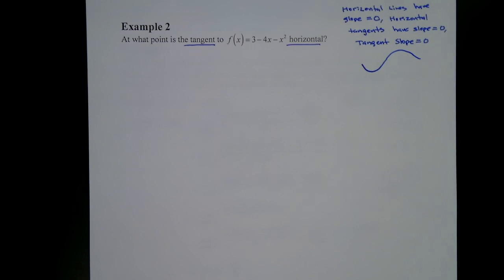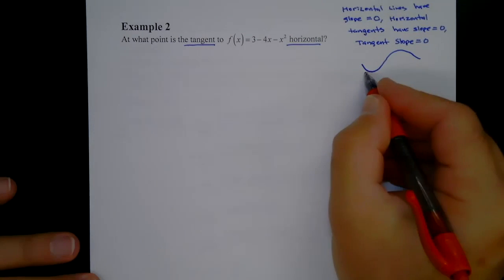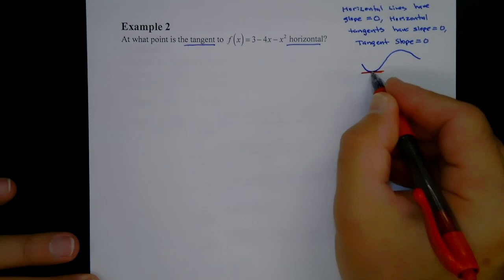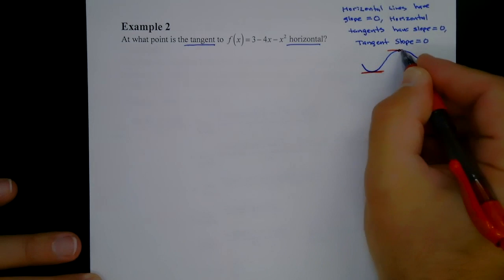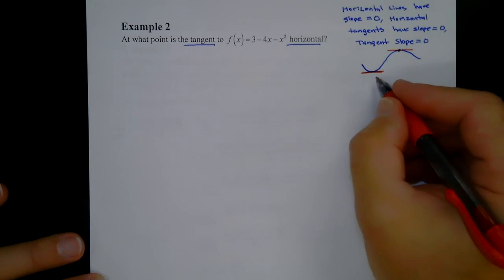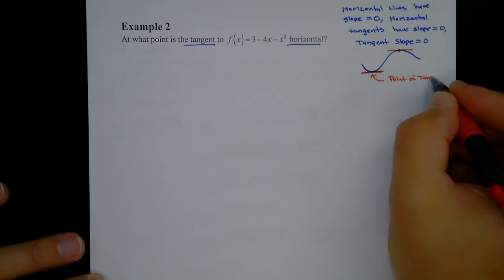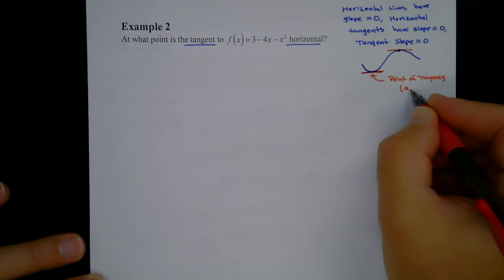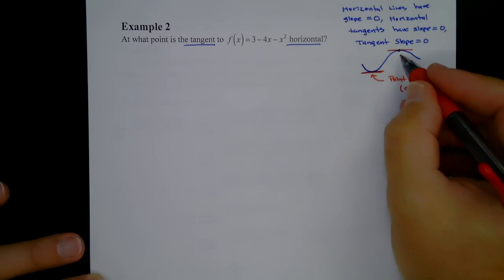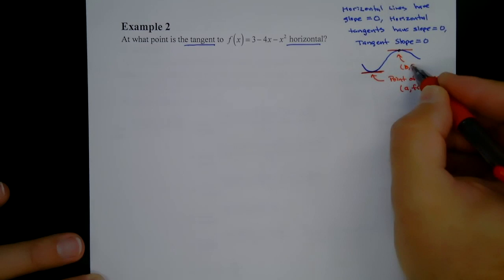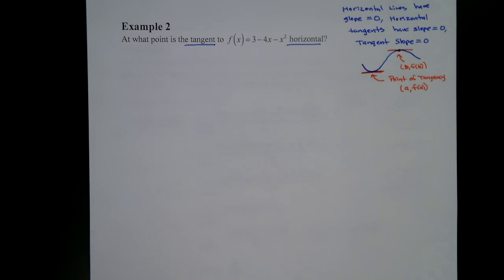For example, on a parabola-like curve, we could have a tangent slope that's zero right at the top — it's horizontal right there. The coordinates of that point are called the point of tangency, which would be (a, f(a)). There could also be a second point (b, f(b)) — you can have more than one horizontal tangent.